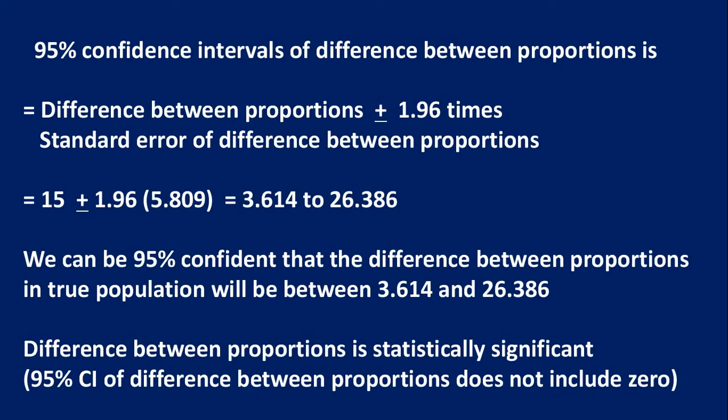Now we calculate the 95% confidence interval of difference between proportions: difference between proportions plus or minus 1.96 times the standard error. That is 15 plus or minus 1.96 multiplied by 5.809, giving a range of 3.614 to 26.386. We can be 95% confident the difference between proportions in the true population is between 3.614 and 26.386. This difference is statistically significant because the 95% confidence interval does not include 0.